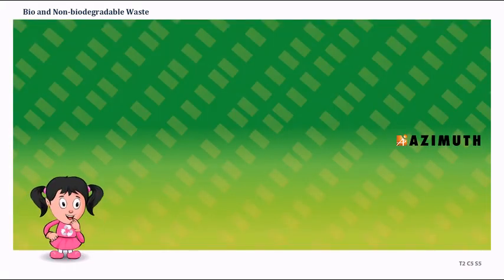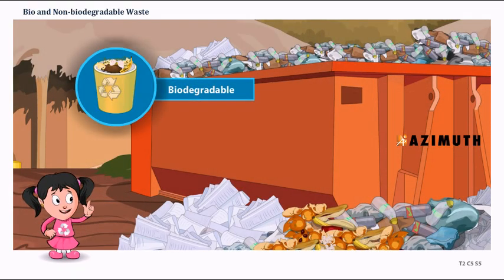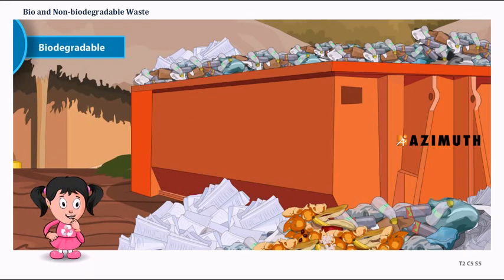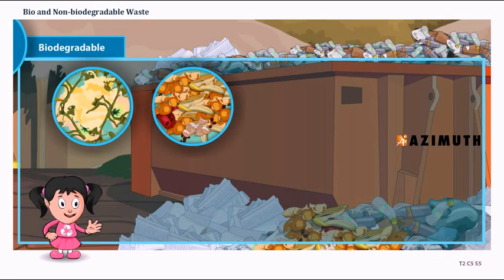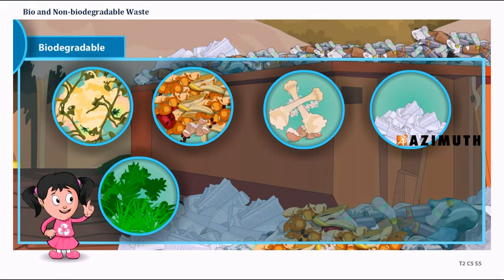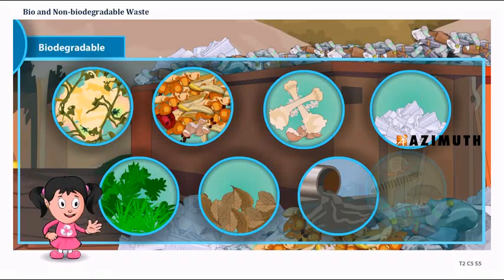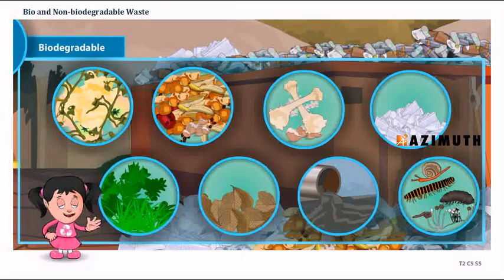Waste can be broadly categorized under two types: biodegradable and non-biodegradable. Biodegradable waste examples include vegetable and fruit peels, food scraps, paper, plant or grass trimmings, dry leaves, and sewage. These wastes break down and get decomposed by the action of microorganisms, and what is obtained from the soil gets returned to the soil without any negative consequences.